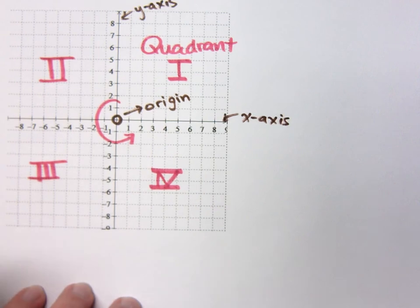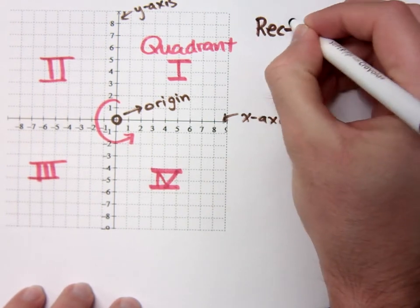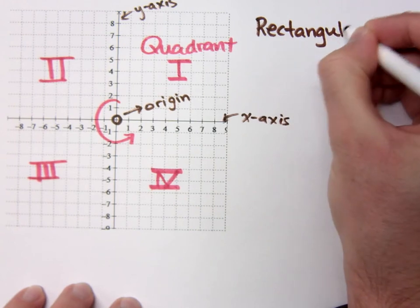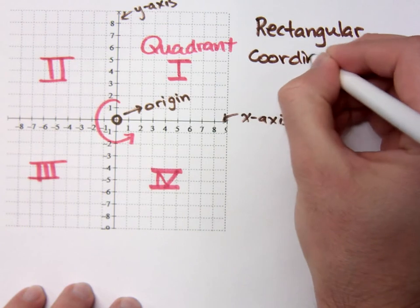And all the stuff that we see right here makes up what we call the rectangular coordinate system. This makes up the rectangular coordinate system.